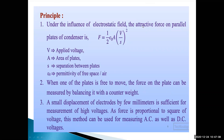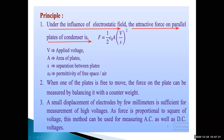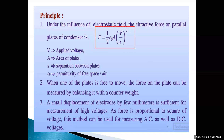Principle of operation of electrostatic voltmeter: under the influence of electrostatic field, the attractive force on parallel plates of a capacitor is F = (1/2) × ε₀ × A × (V/s)², where V is the applied voltage, A is the area of the plates, s is the separation between the plates, and ε₀ is the permittivity of free space.